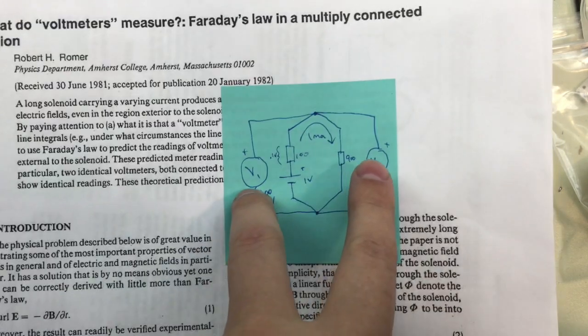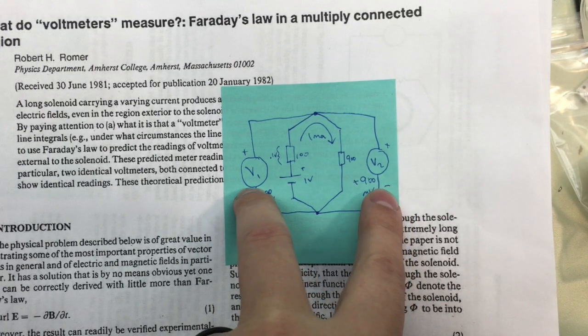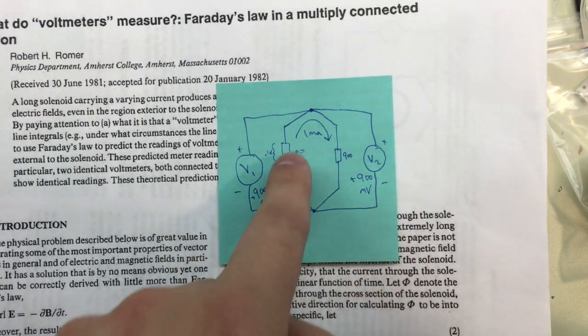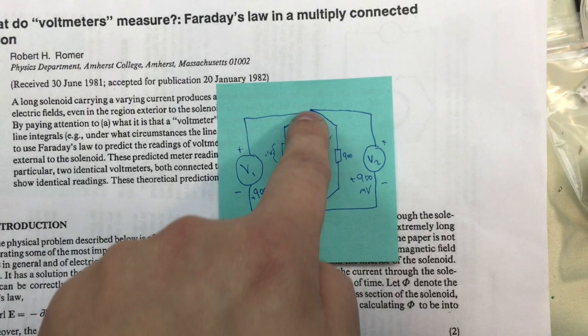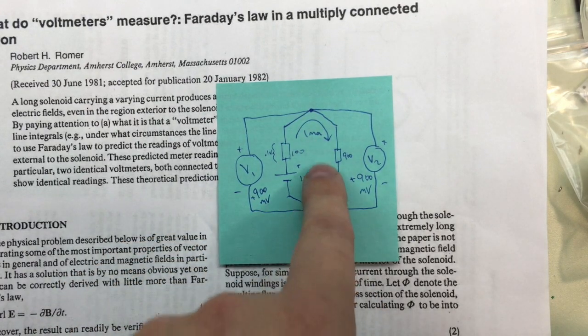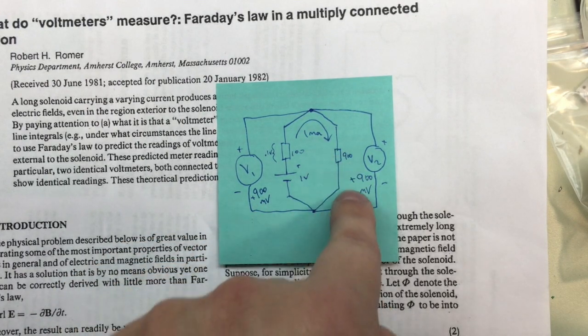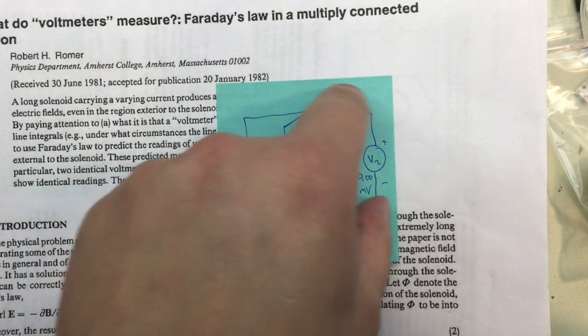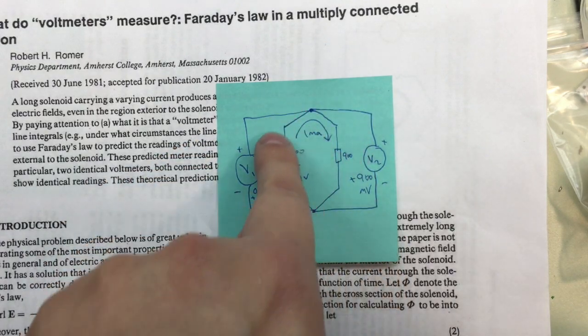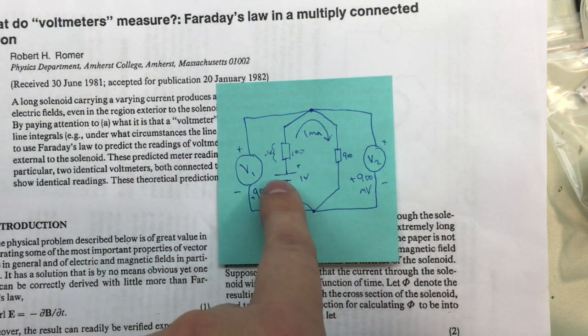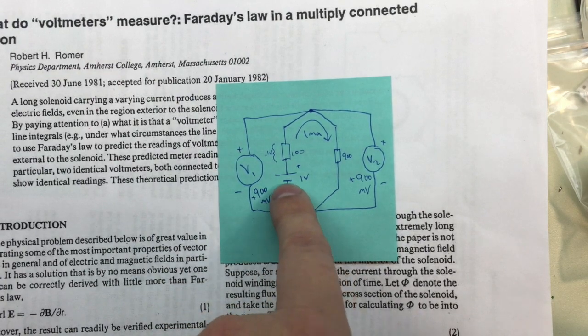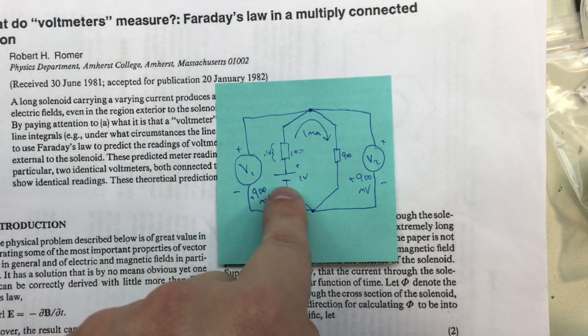And these two meters here, V1 and V2, you'd expect them to read the same amount. If we go this way from top to bottom through this resistor, we can see it's dropping 0.9 volts, and that's what this meter shows.